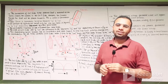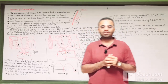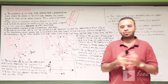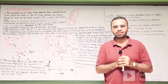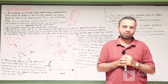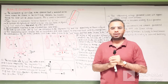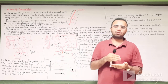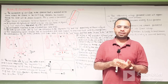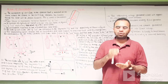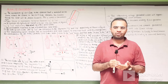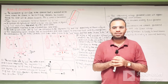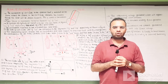Assalamu alaikum dear viewers, Shoa Bhimadav is here with a new lecture on electrical engineering. Today we are going to discuss the action of the commutator in the DC machine, or the function of the commutator. The commutator is a mechanical rectifier which is used to convert the alternating voltage induced in the armature winding of the DC machine into the direct voltage.